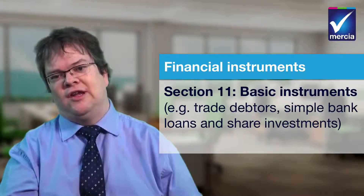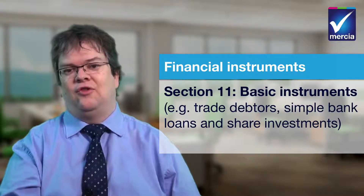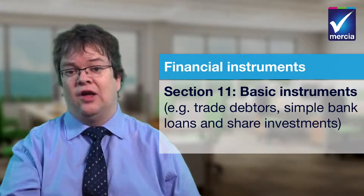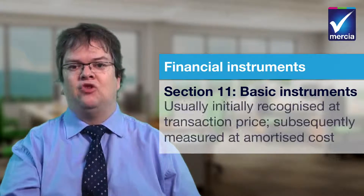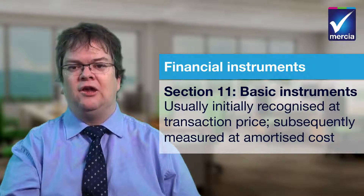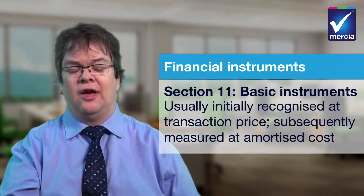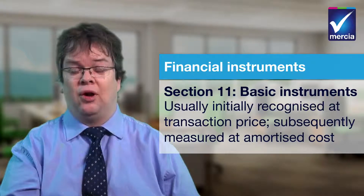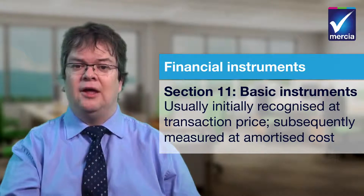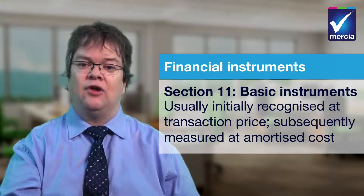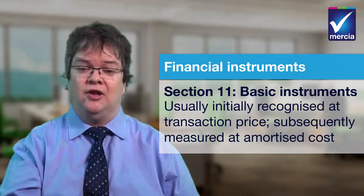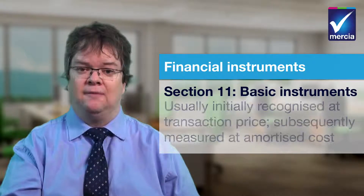Section 11 of FRS 102 deals with basic instruments such as trade debtors, simple bank loans and share investments, which are usually initially recognised at the transaction price and subsequently measured at amortised cost at each period end.